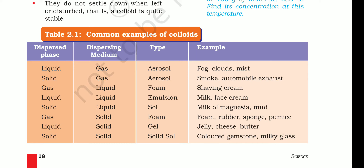Examples of colloids: in the liquid stage we have fog, cloud, and mist. In solid form we have smoke. In the gaseous stage we have foam — such as shaving cream. Other examples include jelly, cheese, and butter, where the dispersed phase is liquid in a solid dispersing medium.